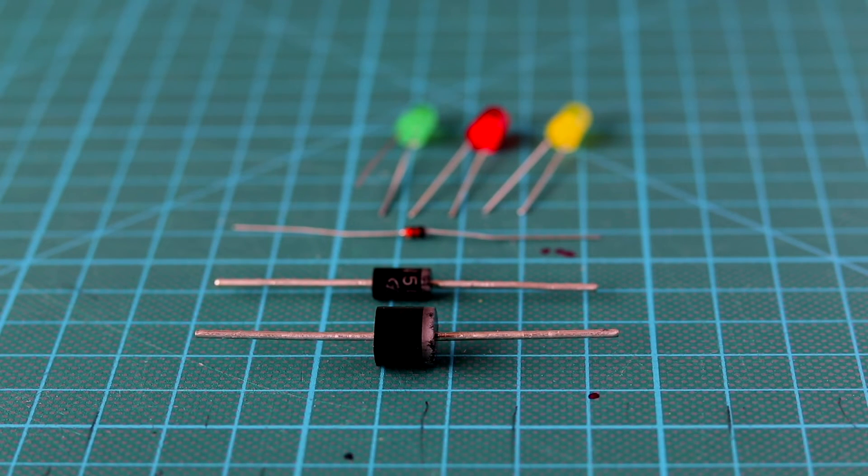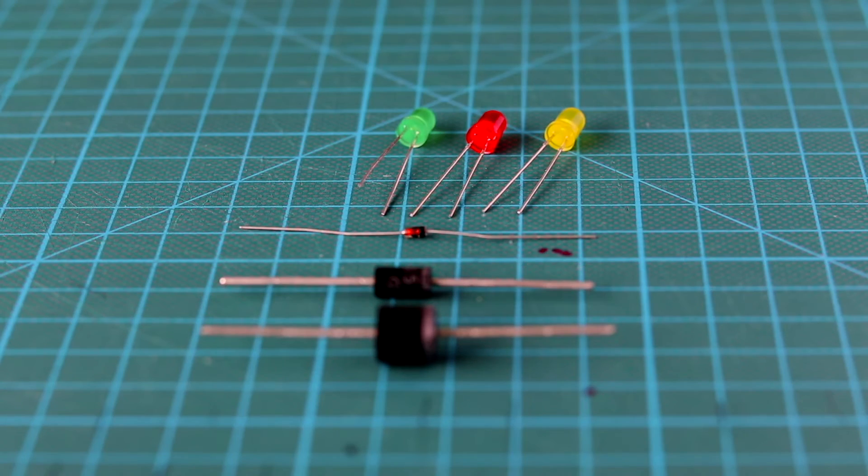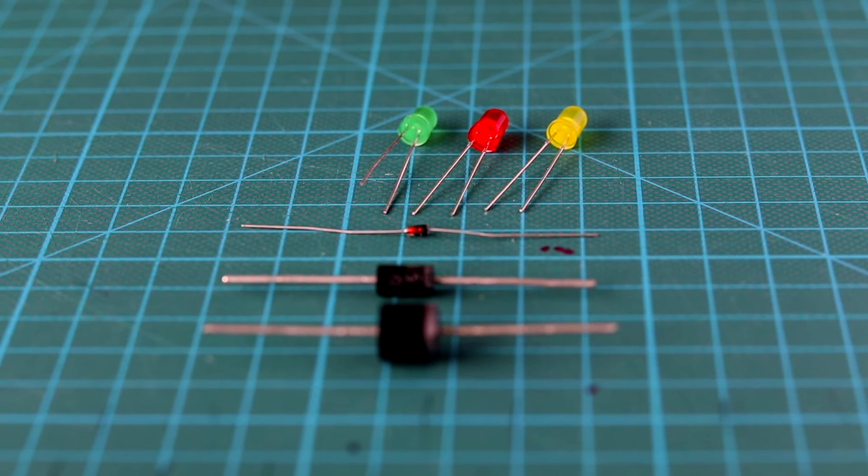The second quick point is that when reverse biased, the diode cannot take any voltage. At some point, if the voltage is high enough, the threshold is called breakdown voltage, the diode will give way and the current will flow in the reverse direction.